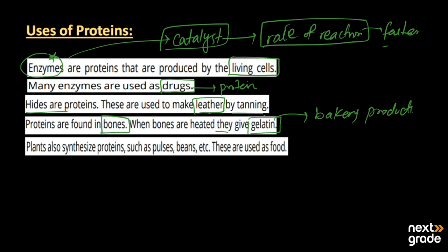The leather produced by tanning is also used for making shoes, jackets, and sports items. This is another use of proteins.